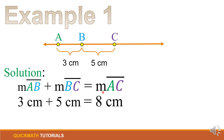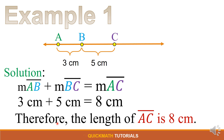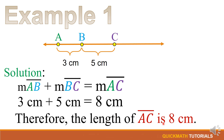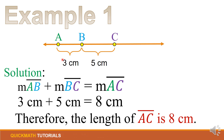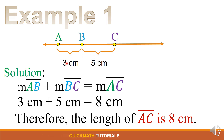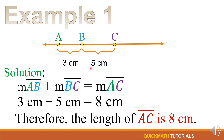This 8 cm is the measure of line segment AC. Therefore the length of line segment AC is 8 cm. As you can see in this illustration, to find the measure of line segment A up to C, we just add these two measures: 3 plus 5 is equal to 8 cm.